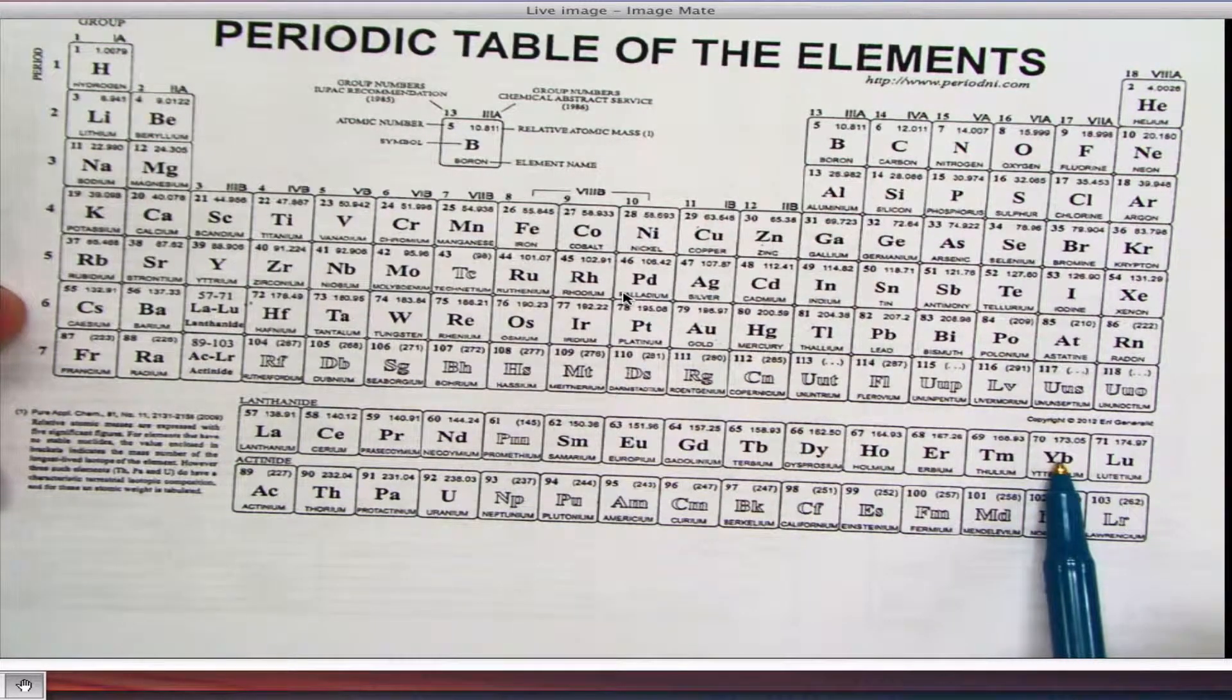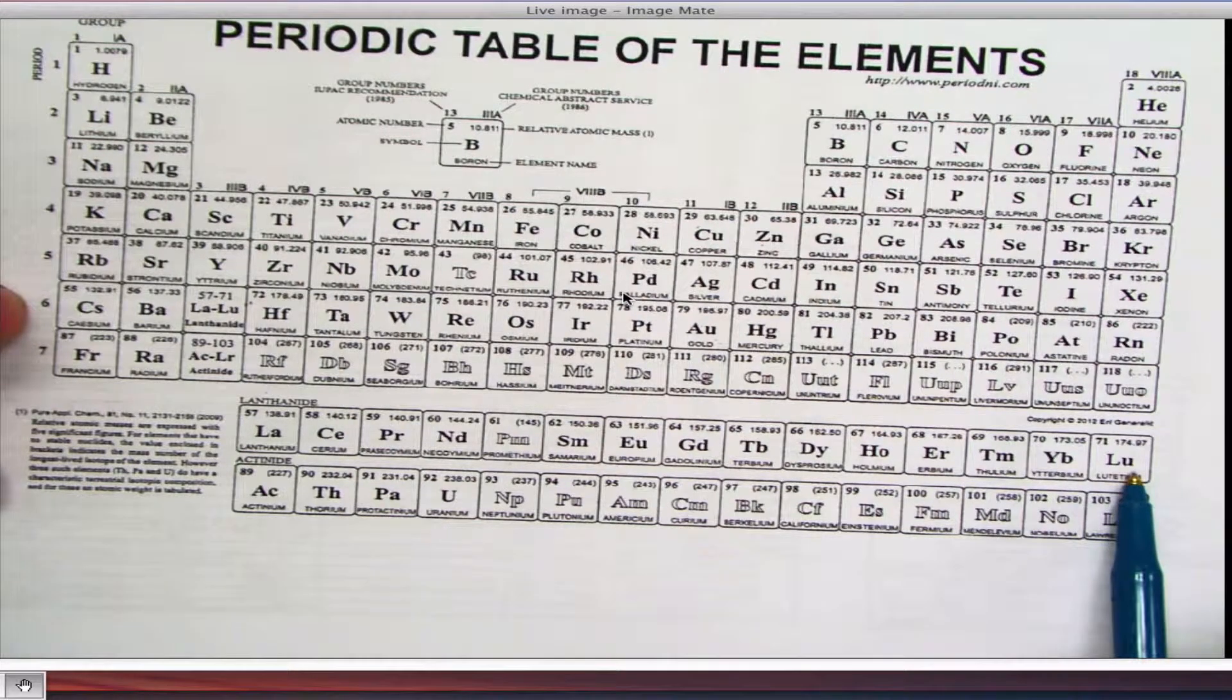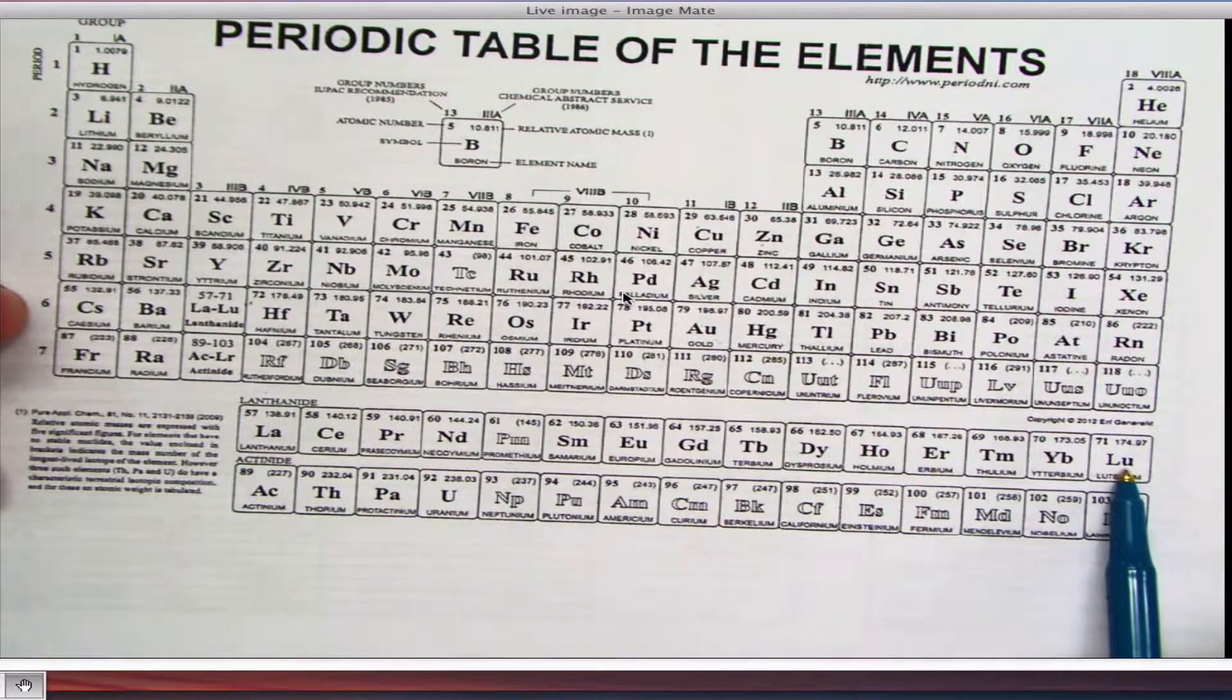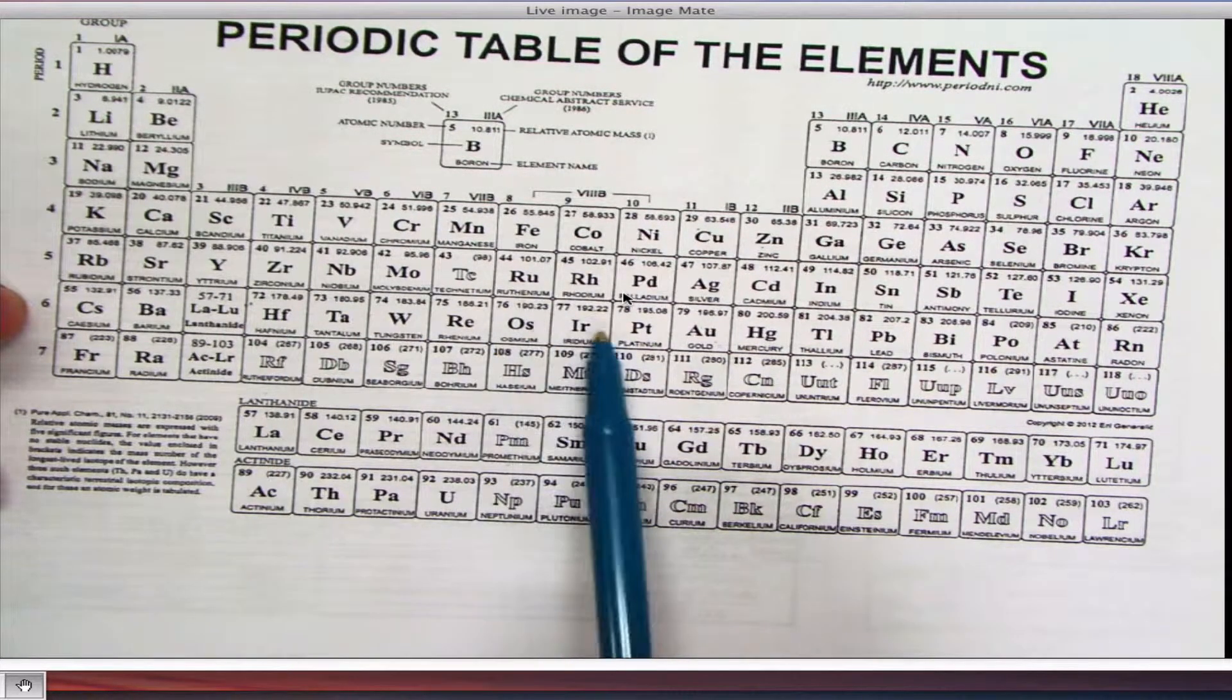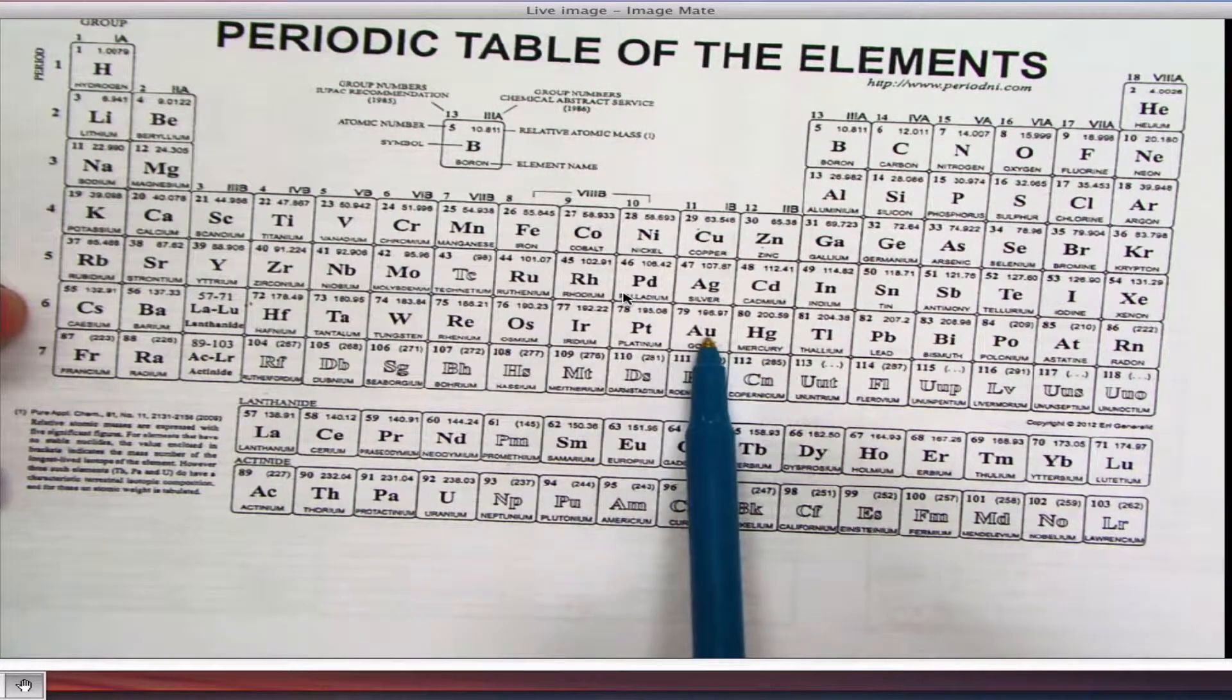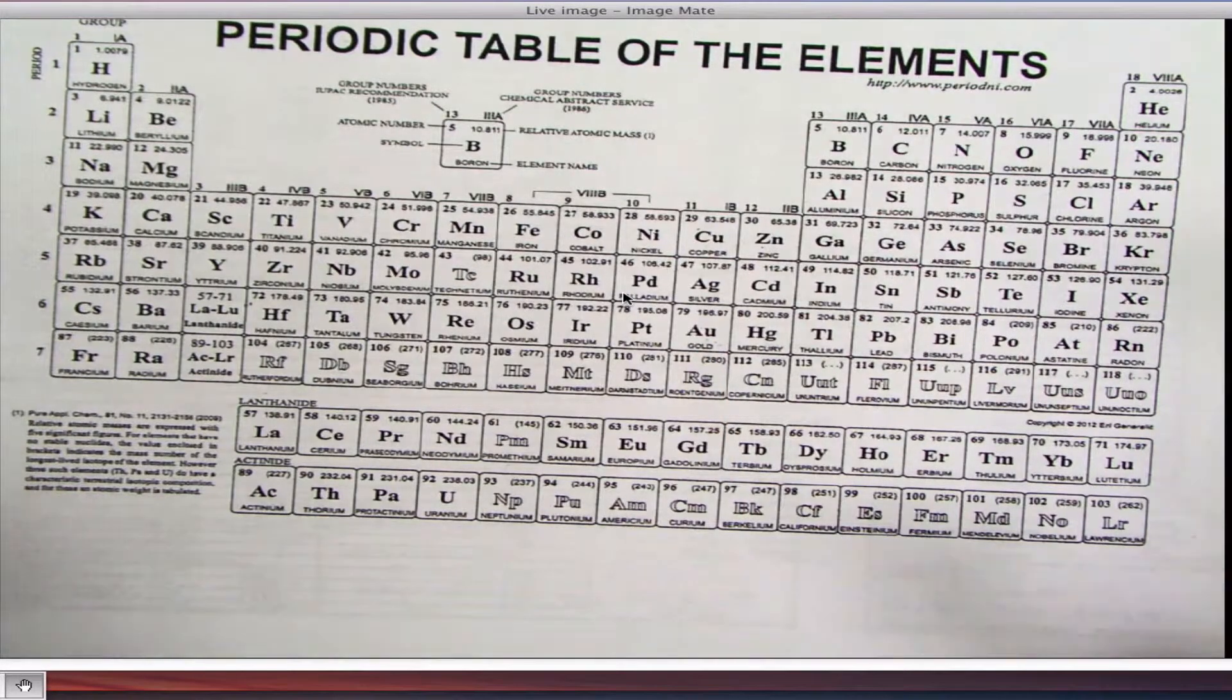Because remember, you can only have 14 maximum in the F row. And this lutetium would be your first D. So this would be 5D1, 2, 3, 4, 5, 6, 7, 8, 9. So 5D9 is my last number I write. And you don't write every number. You summarize the rows.